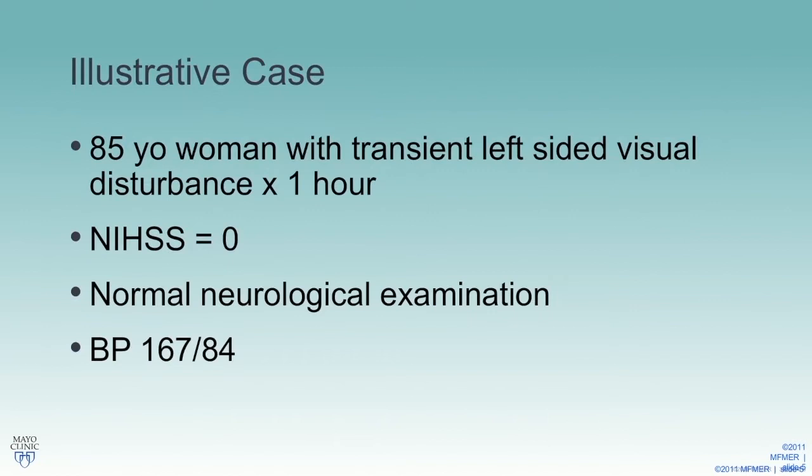This is an 85-year-old woman who was seen in the emergency department after a left-sided visual disturbance that lasted for about an hour and then resolved spontaneously. Her NIH stroke scale score was zero when she was examined, and she had a normal overall neurologic examination. Her blood pressure was 167 over 84.